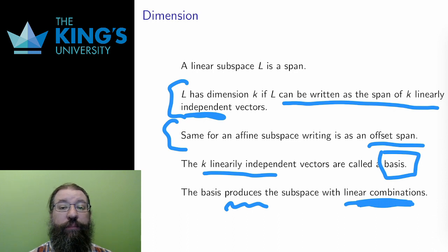A spanning set is a basis if it is minimal, if it is the smallest collection of vectors that can span the subspace. Note that a basis is not unique. Linear subspaces have many bases. But they're all minimal, since they all have the same number of vectors, and that number is the dimension. A line is the span of one vector. It has a basis of one vector. A plane is the span of two independent vectors, has a basis of two vectors, and so on.